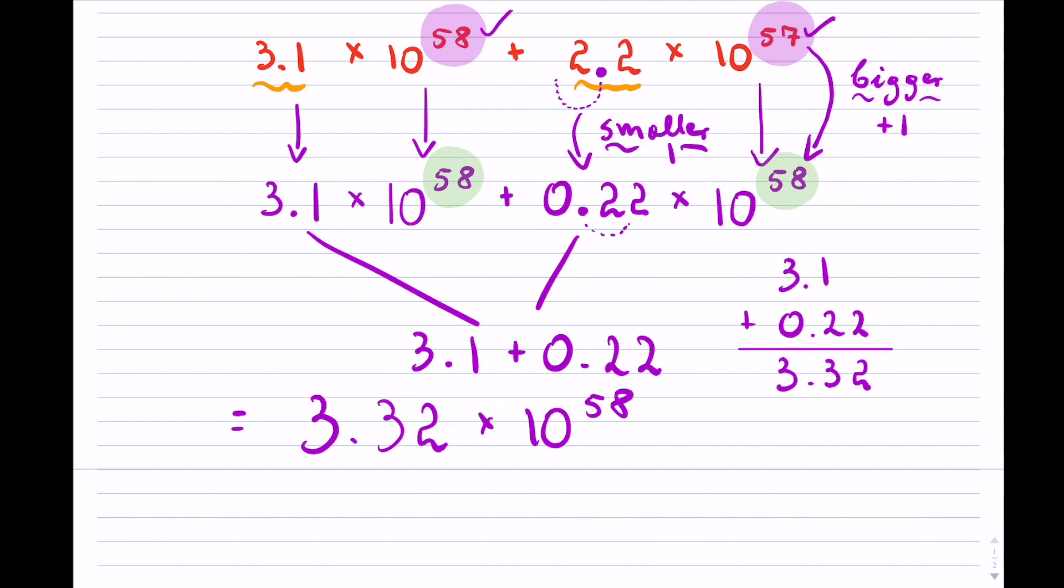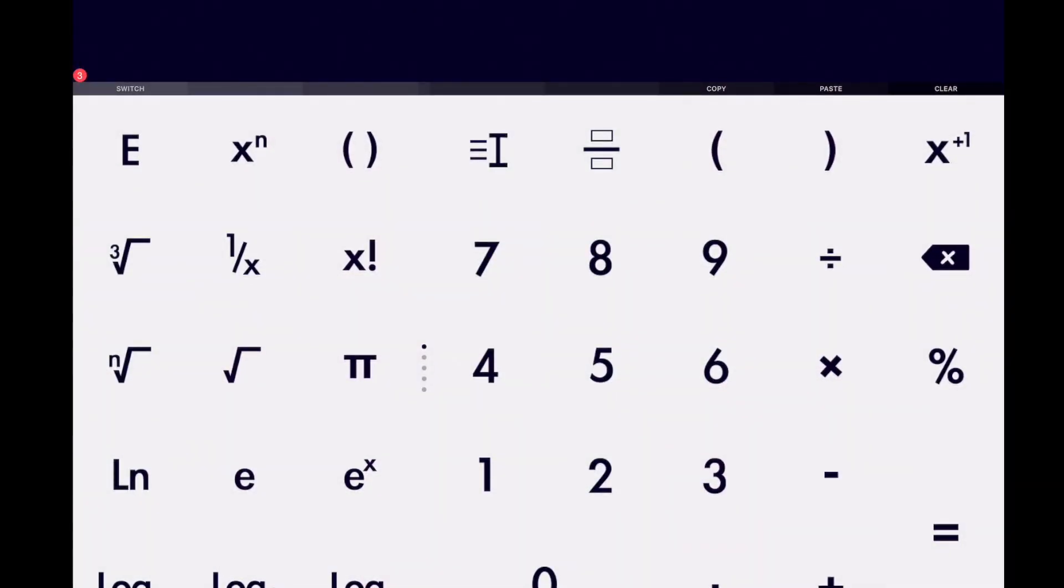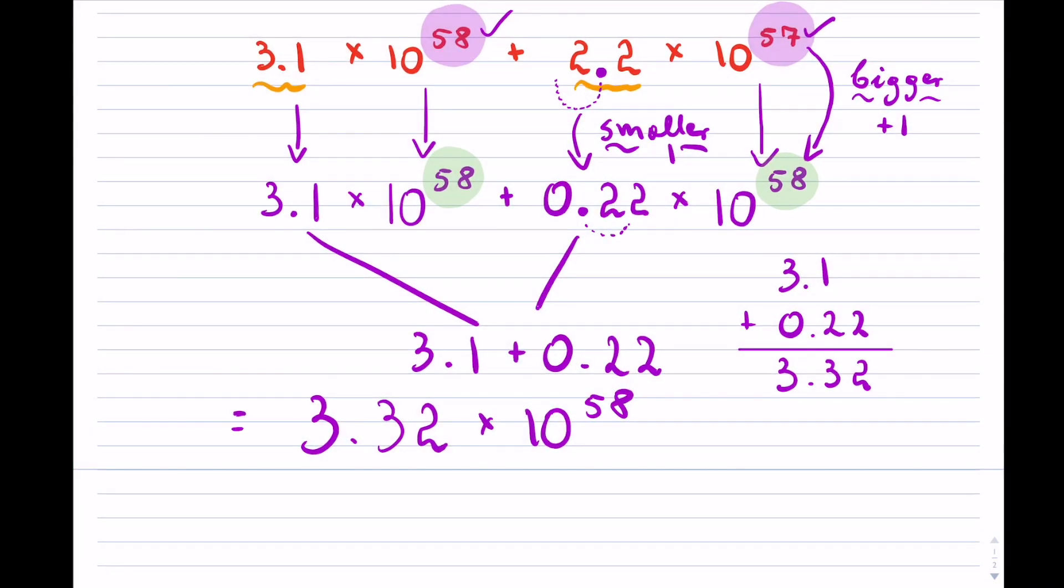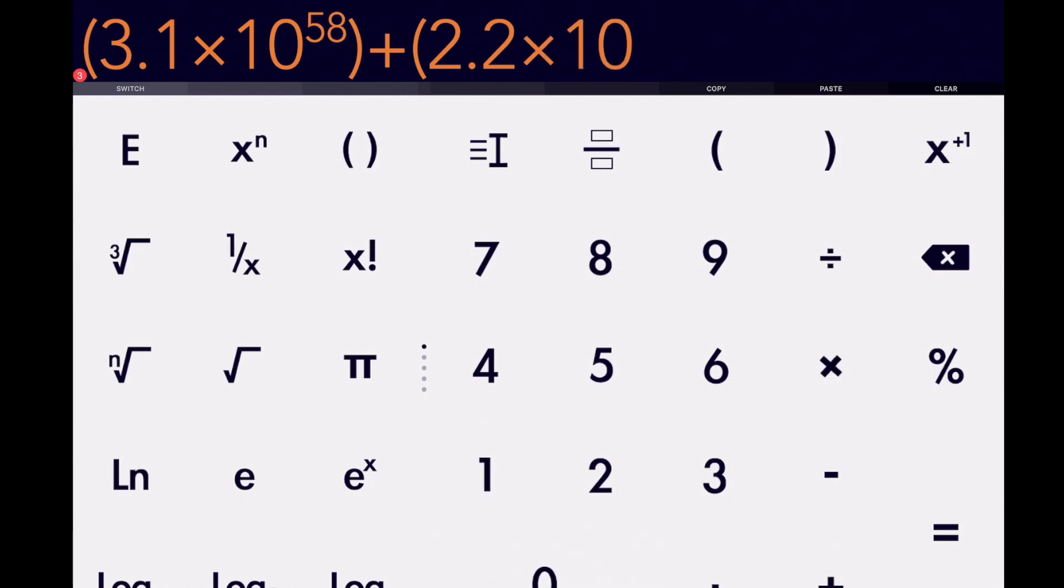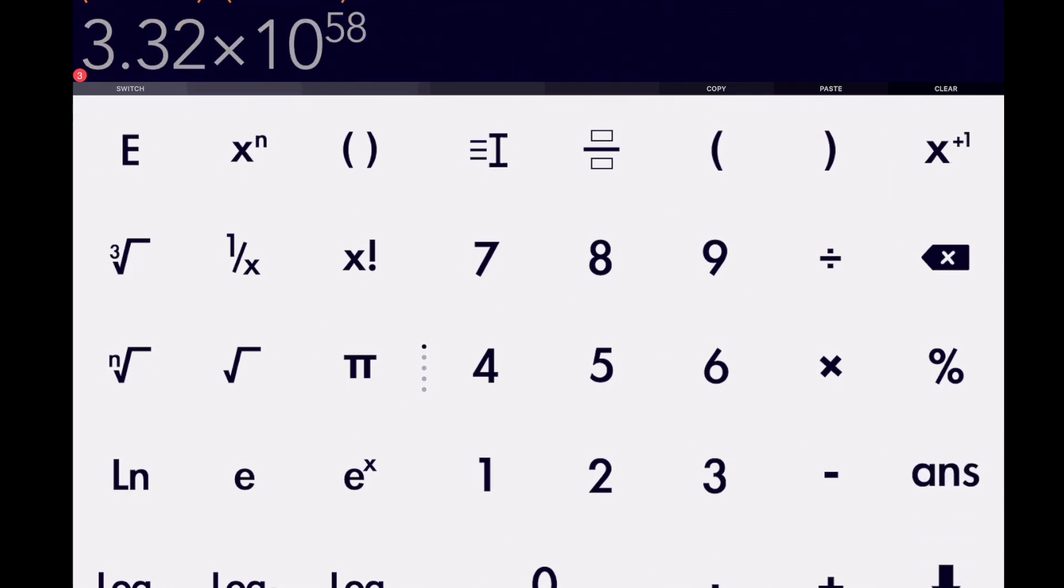I do want to show you that you can do this on a calculator if you were allowed. So for instance, if I have a calculator here, I'll put the numbers in brackets, so it was 3.1 times 10 to the exponent 58, plus it was 2.2 times 10 to the 57, and if I hit equals, notice that's exactly what it is.